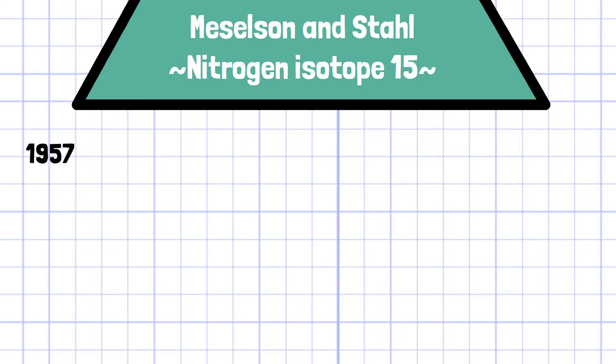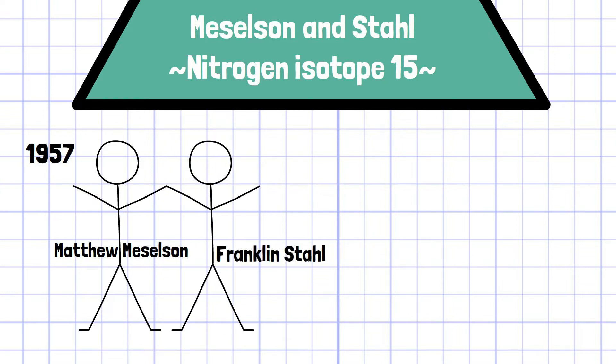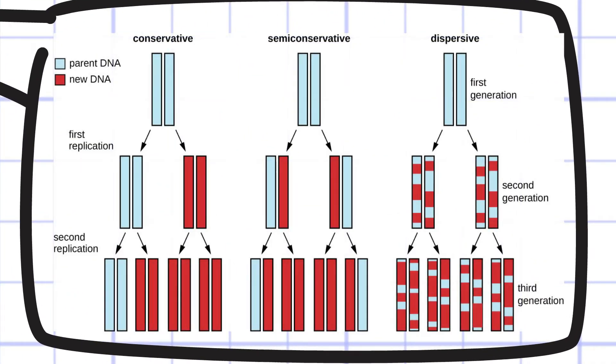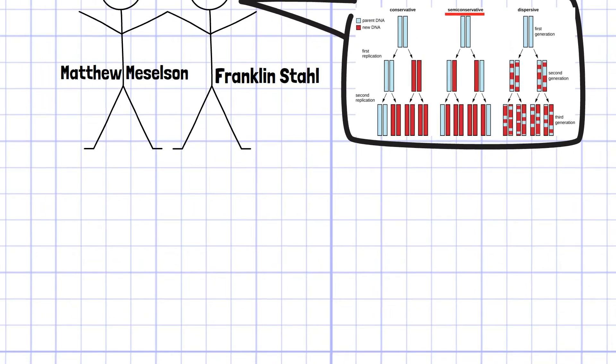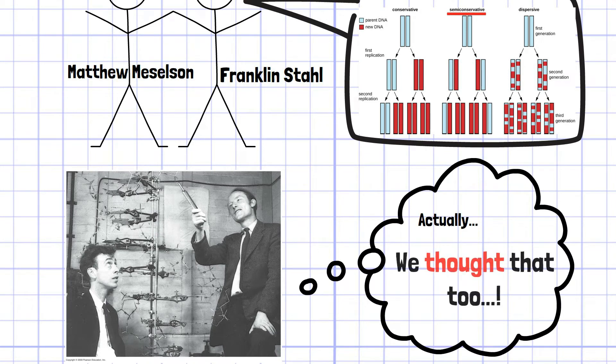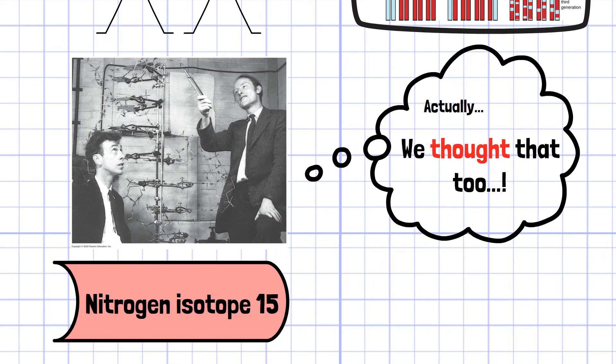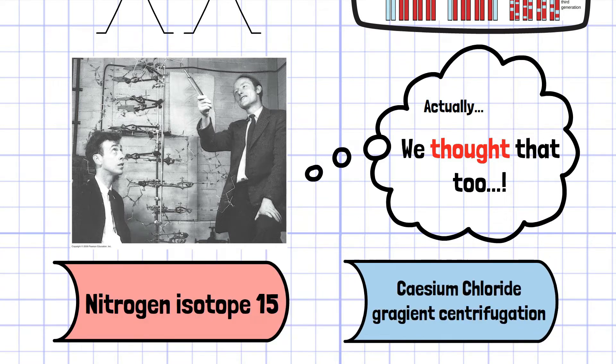In 1957, American biologists Matthew Meselson and Franklin Stahl conducted an experiment to prove the semi-conservative replication pattern of DNA double helix, which was originally proposed by Watson and Crick, by applying two new techniques: the Nitrogen Isotope 15 and Cesium Chloride Centrifugation method. In this video, the Nitrogen Isotope 15 will be explained.